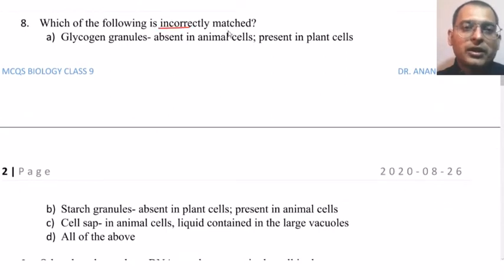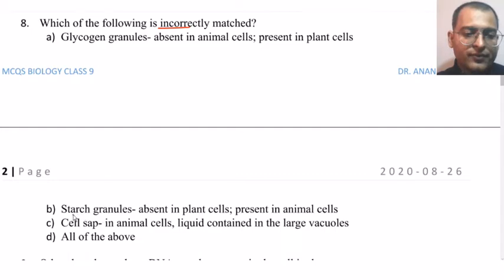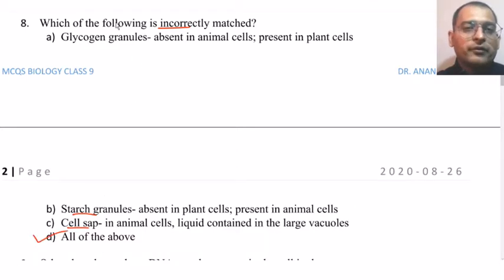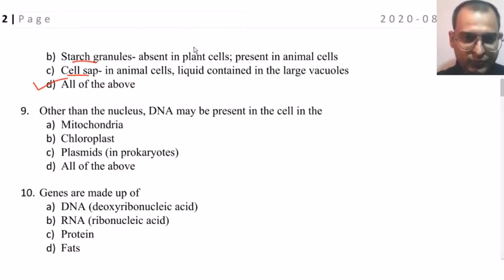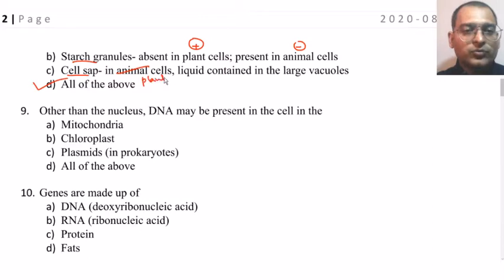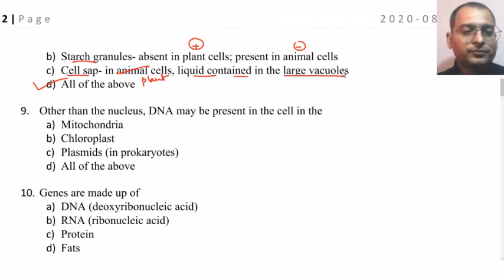Next question: which of the following is incorrect? Glycogen granules — absent in animals, present in plants; starch granules — absent in plants, present in animal cells; cell sap — in animal cells, liquid contained in large vacuoles; all of the above. The answer is all of the above, because glycogen is present in animal cells and absent in plant cells; starch granules are present in plant cells and absent in animal cells; and cell sap is present in plant cells, not animal cells — it is the liquid contained within large vacuoles.